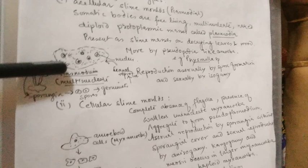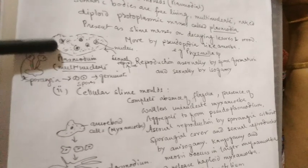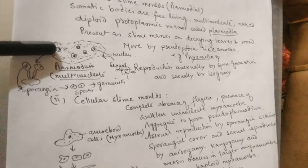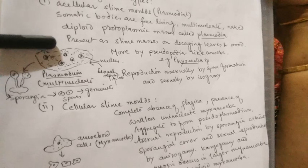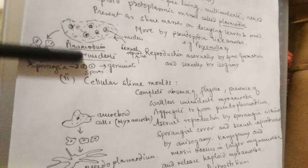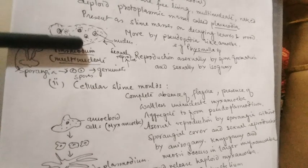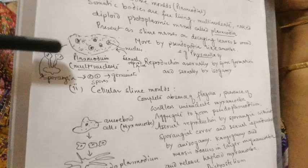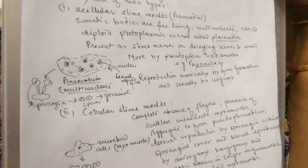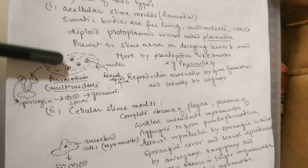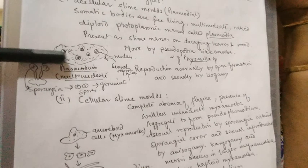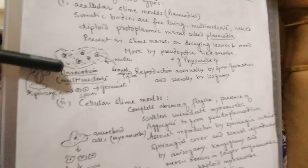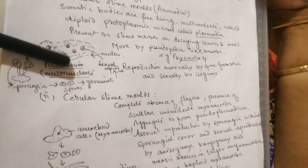The somatic parts are without cell wall. They are saprophytic like fungi and do not have locomotory organs. They mainly reproduce by spore formation, and sexual reproduction is also present by spore formation. All these characters are very close to fungi, which is why they are called fungi-like protists or slime molds.